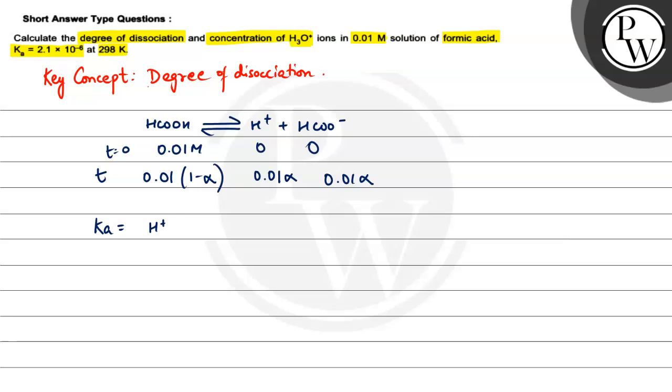Now Ka, how will it be? Ka will be H plus concentration into HCOO minus concentration divided by HCOOH concentration.